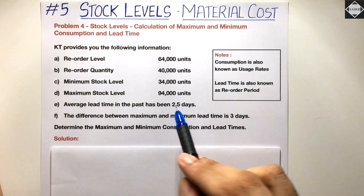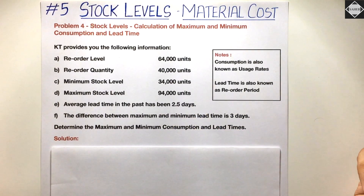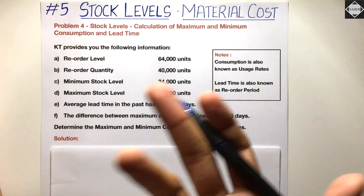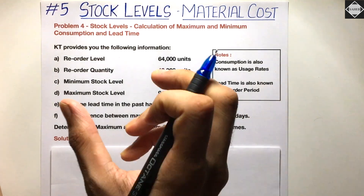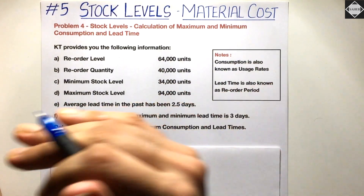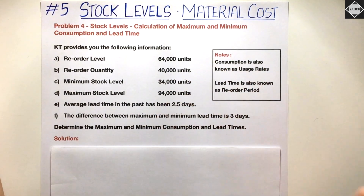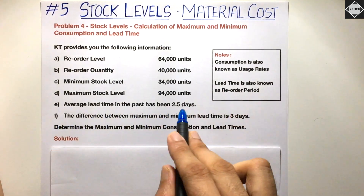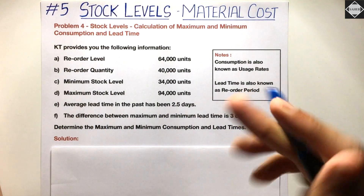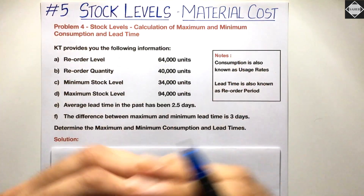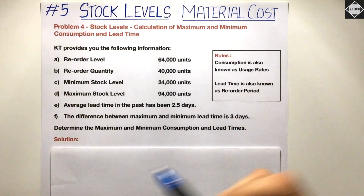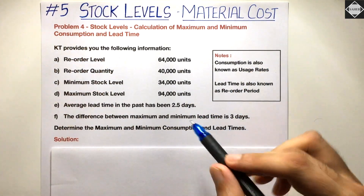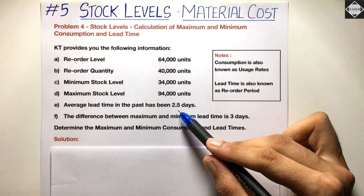The average lead time in the past has been 2.5 days. What's the formula for average lead time? Average lead time = (minimum lead time + maximum lead time) ÷ 2. That's the formula. But here they have directly given you that the average lead time is 2.5 days.